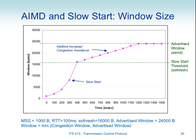Our congestion window may keep increasing, but the sending rate depends on the minimum of the congestion window and the advertised window. For example, if the advertised window is 24,000 bytes and the congestion window reaches 25,000 or 26,000, the sending rate is influenced by the advertised window, not the congestion window. We take the minimum of the two to determine how much we're allowed to send.